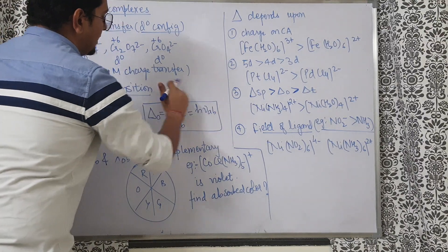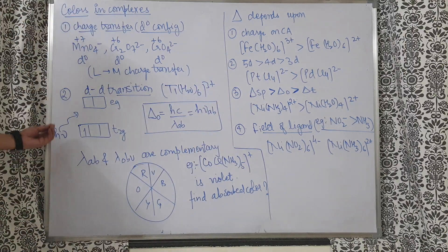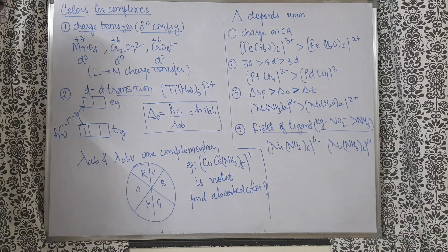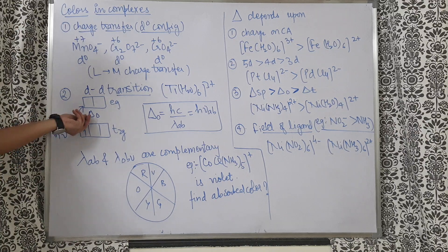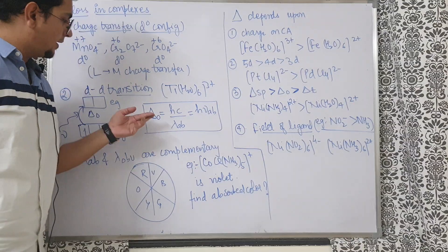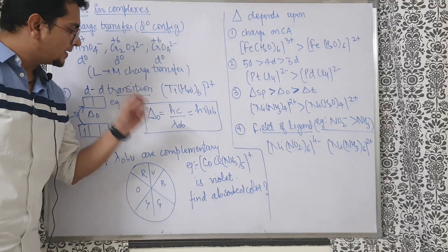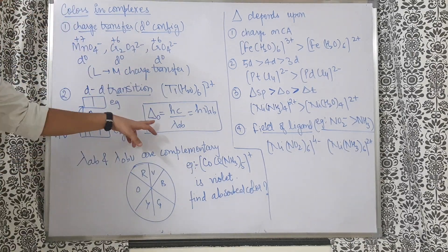In the aqueous medium, Ti(H2O)6³⁺ shows a purple color because it absorbs light — a photon of energy hν is absorbed and the electron jumps from t2g to eg. The energy required for this jump is Δo (the octahedral crystal field splitting energy). By Planck's quantum theory, Δo = hc/λ, where λ is the absorbed wavelength.